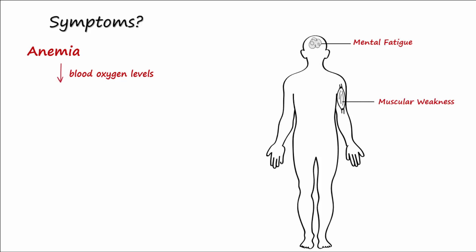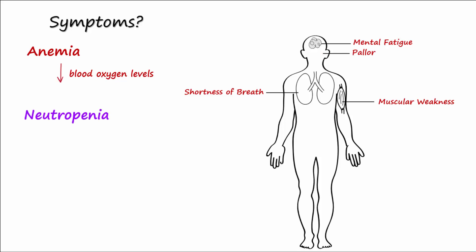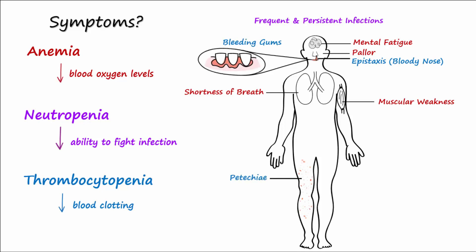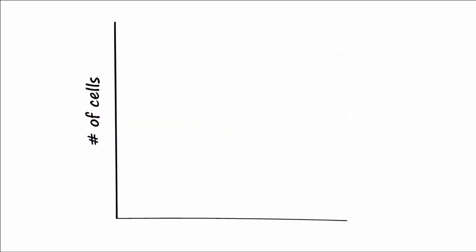Additional anemia symptoms include muscular weakness, shortness of breath, and pallor. With fewer neutrophils — or neutropenia — due to a decreased ability to fight infections, one would see frequent and persistent infections occurring systemically. With fewer platelets — or thrombocytopenia — platelets help the blood to clot, so symptoms from decreased blood clotting can be seen. This includes epistaxis, bleeding gums, petechiae, and ecchymosis, all of which are symptoms associated with thrombocytopenia.